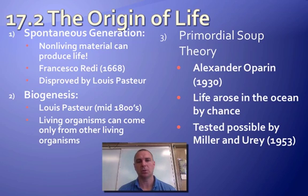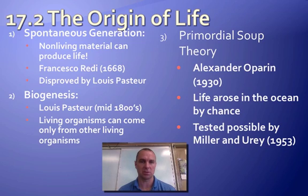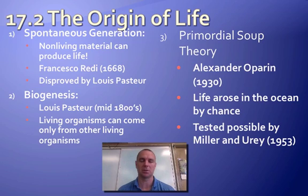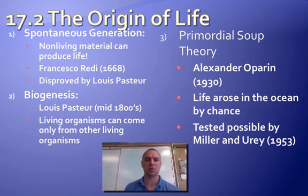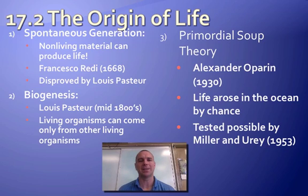Pasteur disproved spontaneous generation — if it had been possible, something would have been growing in the broth all along, and there wasn't. He then came up with biogenesis: 'bio' means living, 'genesis' means the creation of life. Louis Pasteur said that living organisms can only come from other living organisms — humans come from humans, dogs come from dogs, cats from cats.